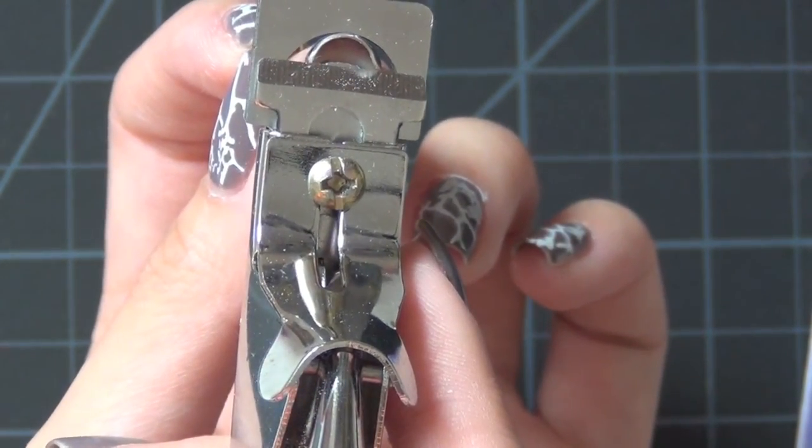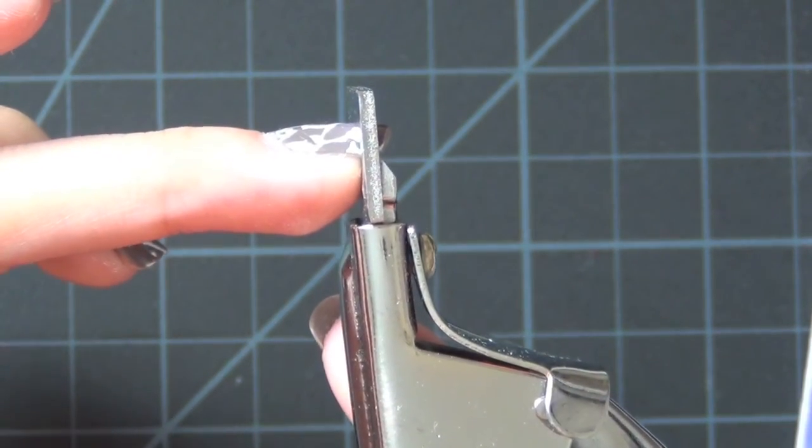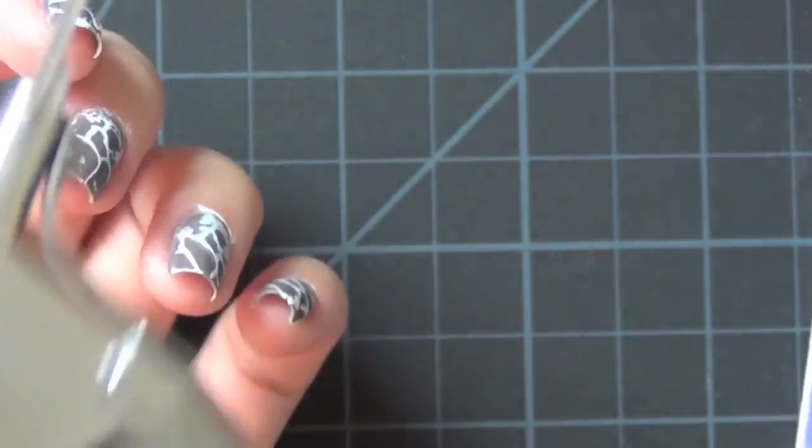Usually if I use a regular nail clipper, I have to clip it twice, like half of the nails at a time, so this is a perfect way to cut it.